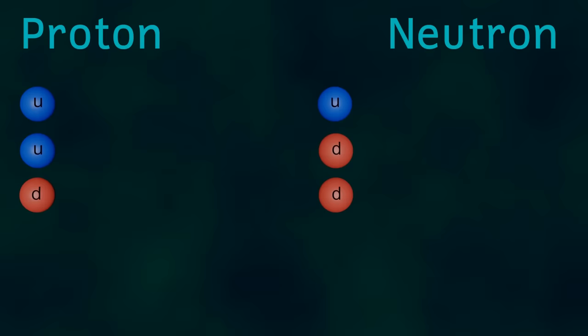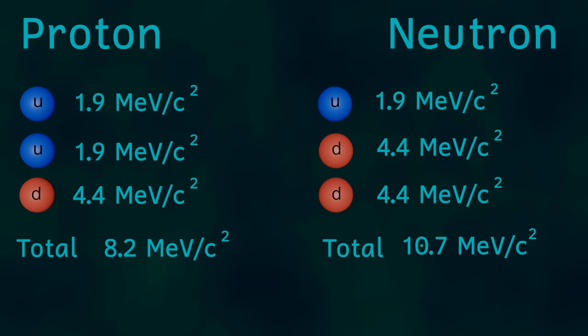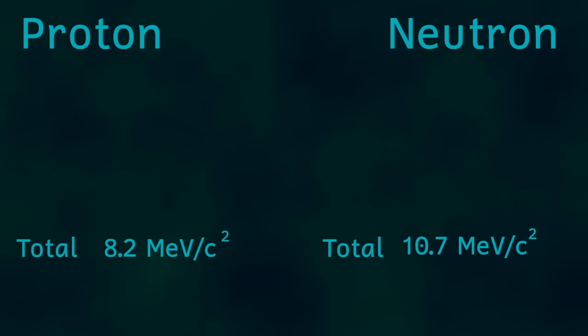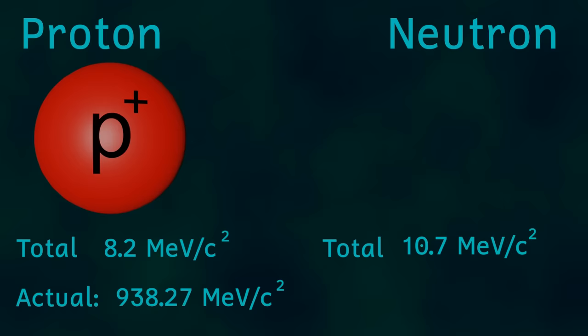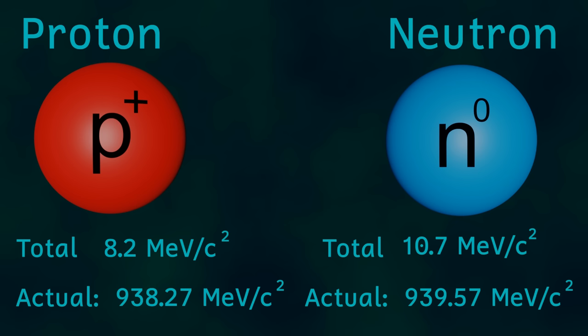You might think that since we know the mass of the constituent quarks that make up each proton and neutron, that we'd be able to calculate relatively easily the mass of a proton and neutron. But sadly this isn't the case. Protons have a mass of 938.27 mega electron volts per c squared. Neutrons are slightly heavier, with a mass of 939.57 mega electron volts per c squared. The mass of a proton and neutron is therefore much higher than the mass of the quarks that make them up.